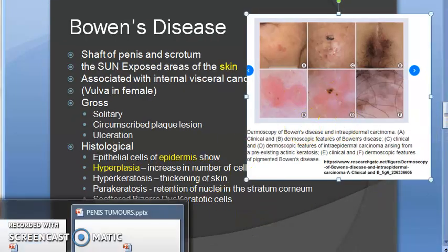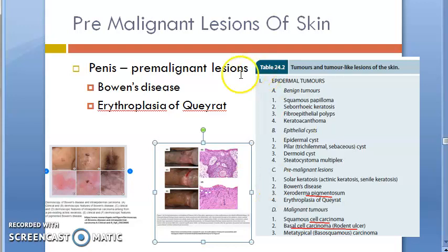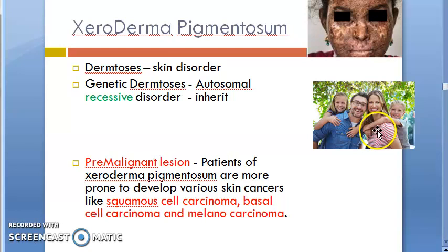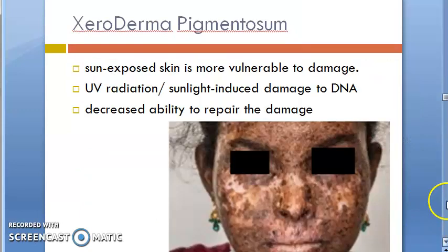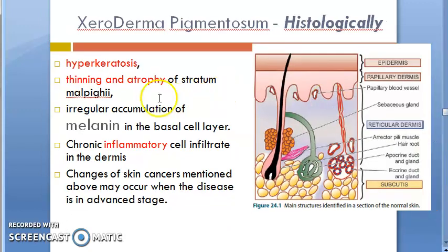These are the pre-malignant lesions of skin. Xeroderma pigmentosum — we have already covered this. It is an inherited autosomal recessive disorder, a genetic dermatosis. It is a pre-malignant lesion that can lead to squamous cell carcinoma, basal cell carcinoma, and melanocarcinoma. In sun-exposed areas, UV damage occurs everywhere and the body is unable to repair the DNA damage. This is not in just anybody — only people who have this genetic problem; it is a hypersensitivity caused by genes.